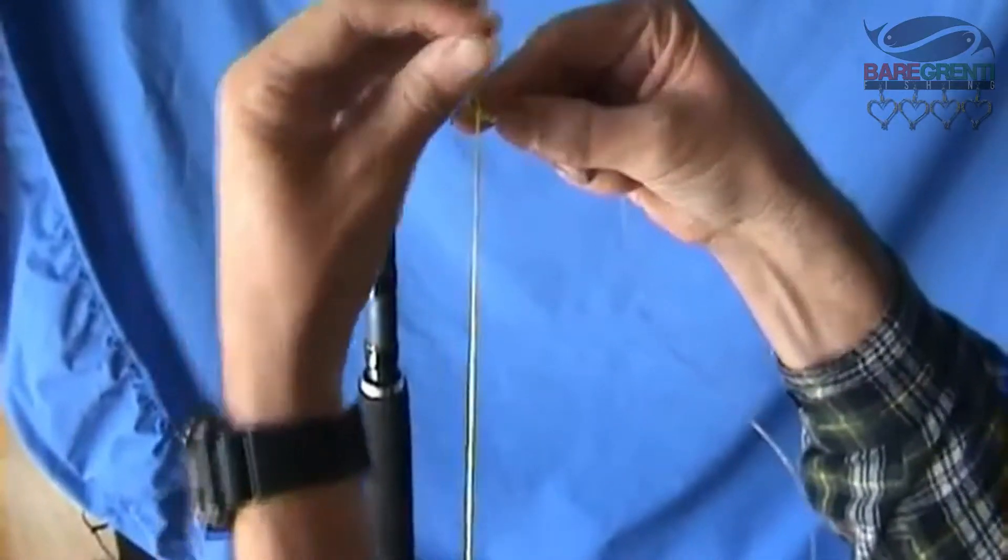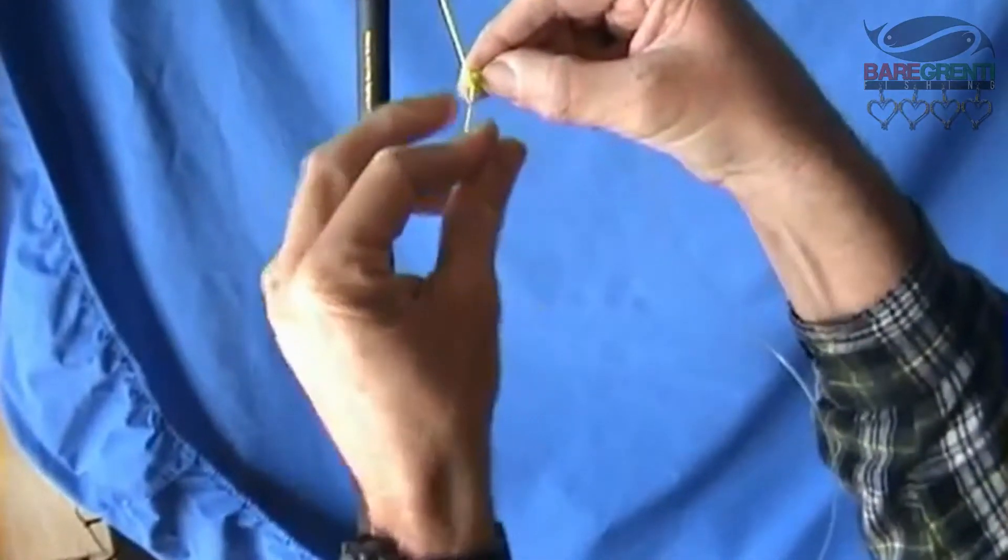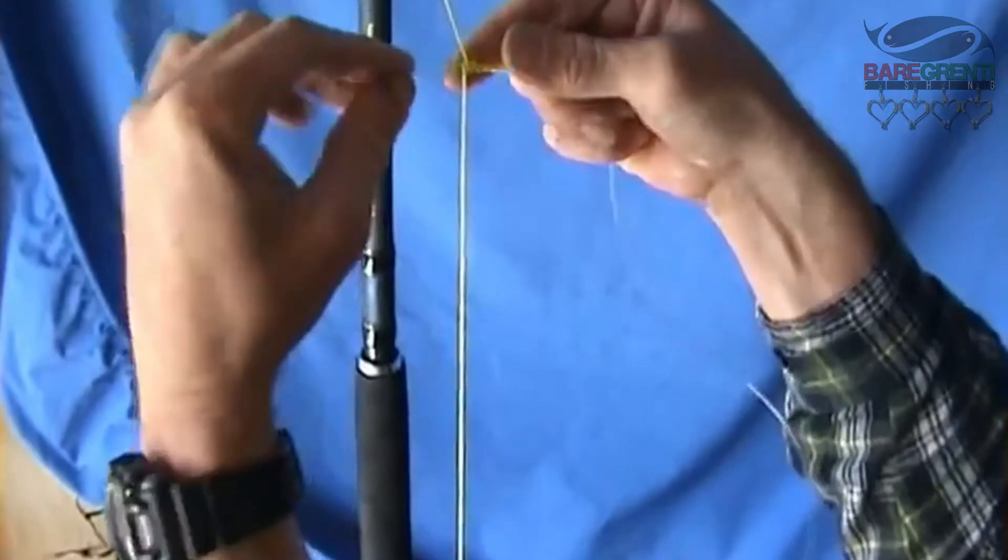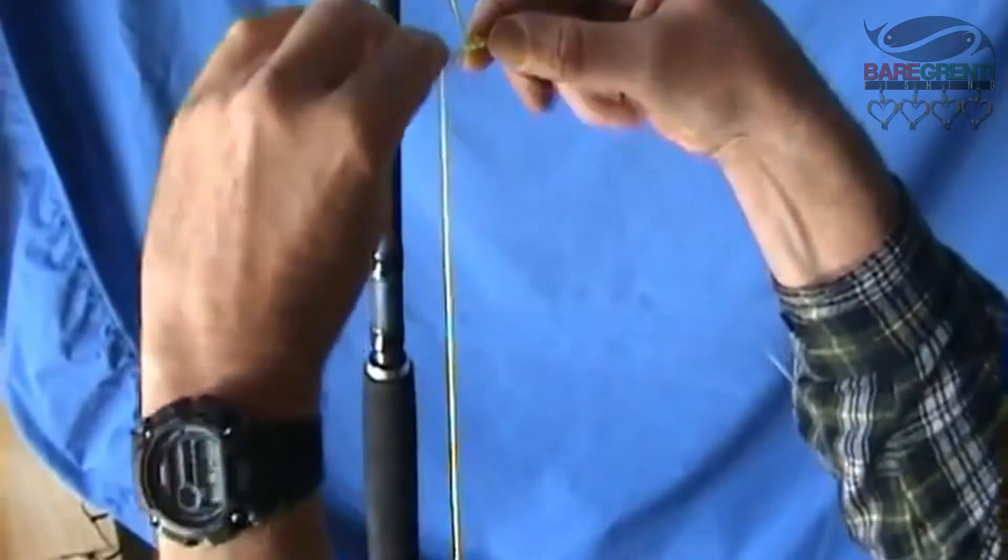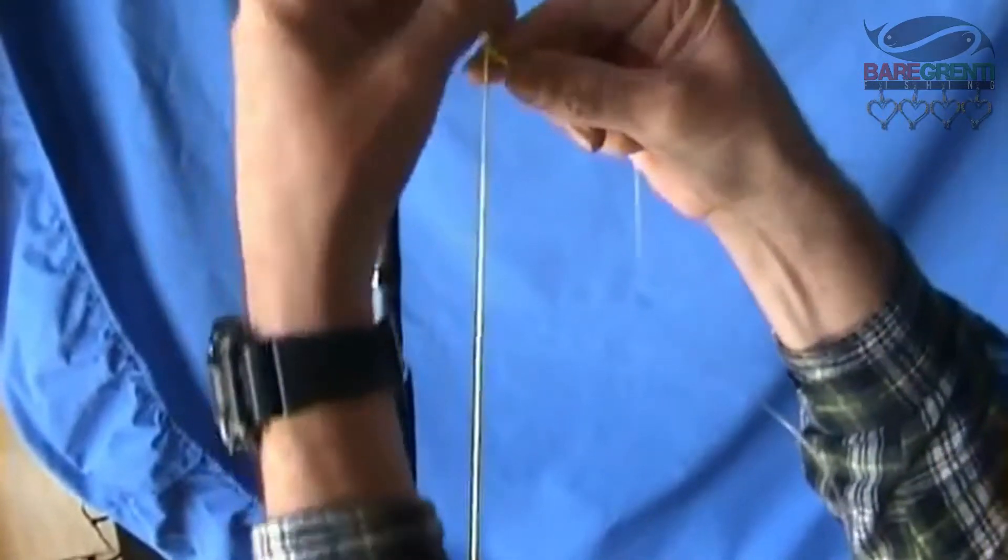You can probably hear the line just slowly getting pulled off the drag off the reel. You can hear it clicking down there. You can see that the braid line has been kept tight all the time.